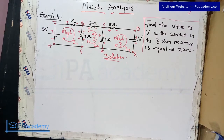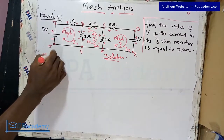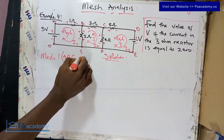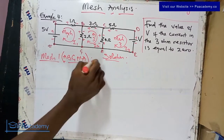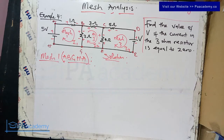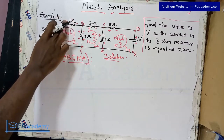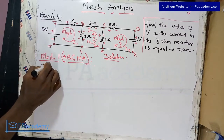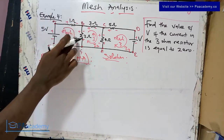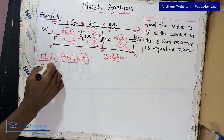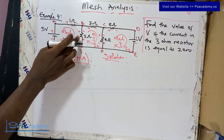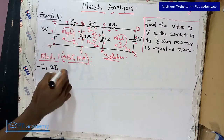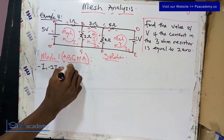Starting with mesh one — the path is a, b, g, h and back to a. Applying KVL from point a: for the one-ohm resistor, from plus to minus, that's minus one-ohm times i1, giving minus i1. Between b and g, the two-ohm resistor with current i1 gives minus 2i1. Because current i2 flows in the opposite direction through the same resistor, we add plus 2i2.